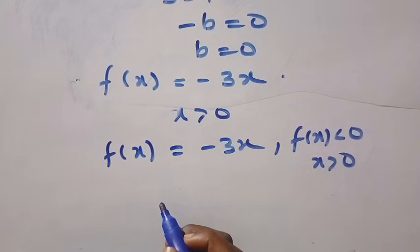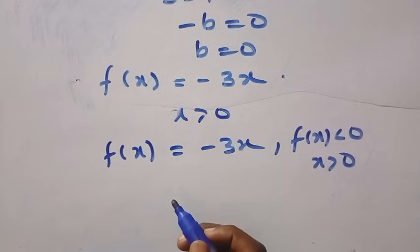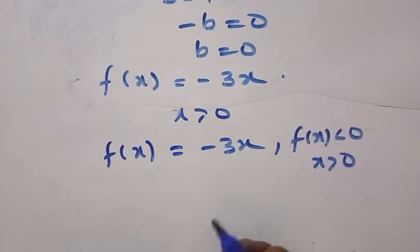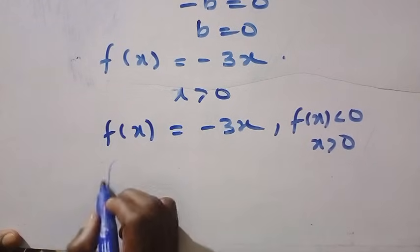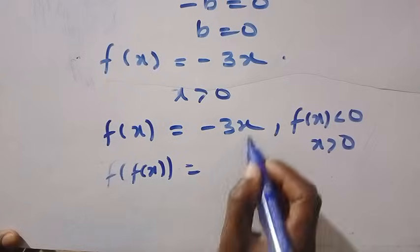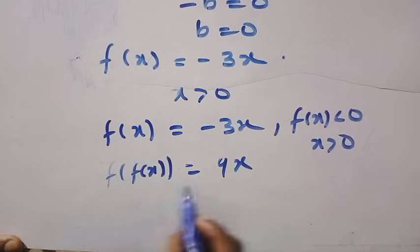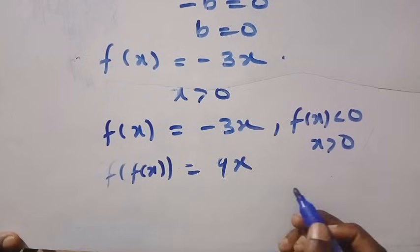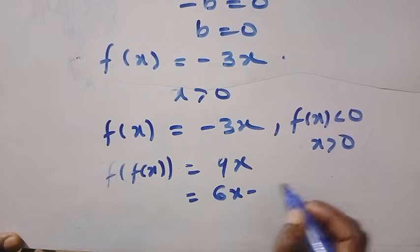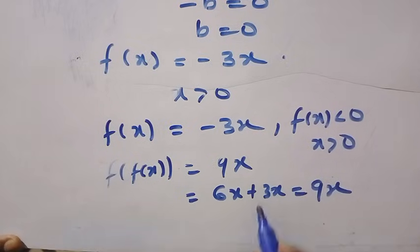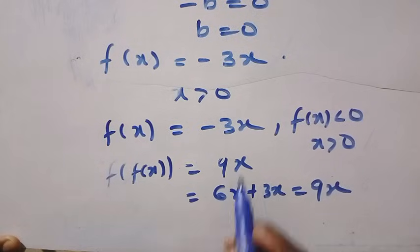Testing for f equals minus 3x, for x greater than 0, we have f of x equals minus 3x, which shows that every f of x is less than 0 here, and x is greater than 0. If we consider an explicit check, suppose we substitute f of f of x, we get 9x, which means this works. Looking at the other side, 6x minus minus 3x equals 9x. But we don't need this case since x is greater than 0.